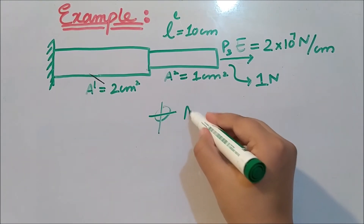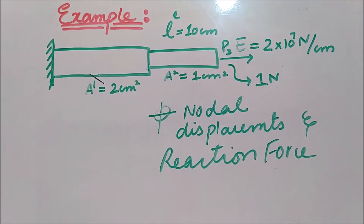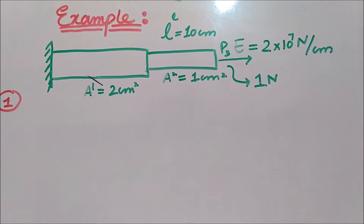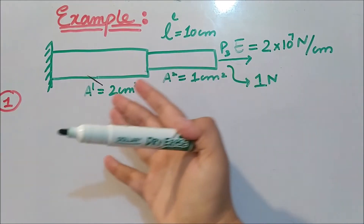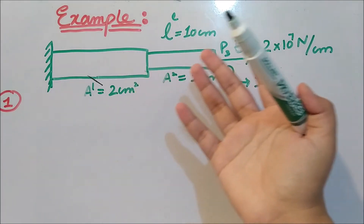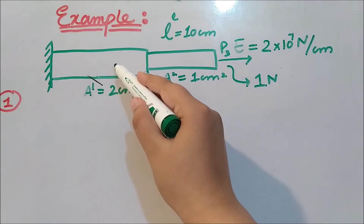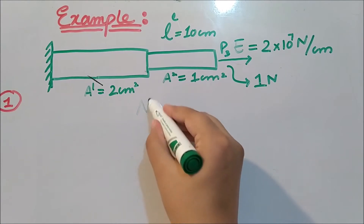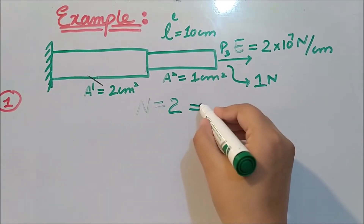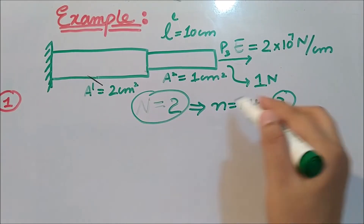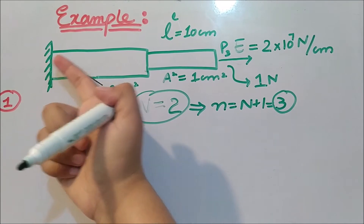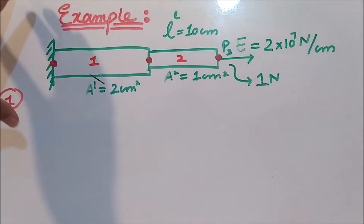In the first step of the direct method we discretize the geometry. We take the first segment as element 1 and the second as element 2. The number of elements N is 2, which gives N+1 = 3 nodes. So we have 2 elements and 3 nodes. Node 1 is at the fixed end, node 2 is in the middle, and node 3 is at the free end. We have linear elements here.